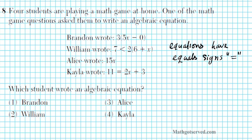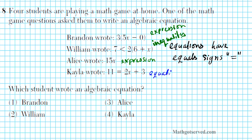We're looking for which statement has an equal sign. The first option by Brandon is an expression. What William has is an inequality. What Elise wrote is an expression again — it doesn't have any equal signs. But look at what Kayla wrote: it has an equal sign, so this is an algebraic equation because we have a variable component associated with it. Our answer is option number 4.